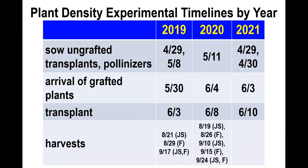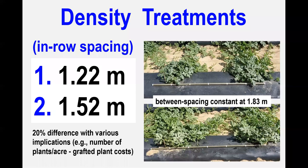The plant density or in-row spacing experiment has followed a timeline each year that is consistent with local practice, which also tends to include multiple harvests. Practice in the area has growers placing plants at various combinations of in- and between-row spacings. Spacing rows 6 feet apart — that is 1.83 meters apart — is common, as is using an in-row spacing of 4 feet or 1.22 meters. We used in-row spacings of 4 and 5 feet, or 1.22 and 1.52 meters respectively. These spacings differ by approximately 20% and therefore represent a potentially meaningful change in the number of plants per acre, the cost of those plants, and other production variables.